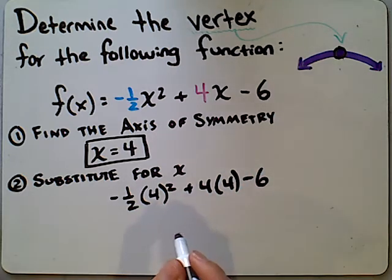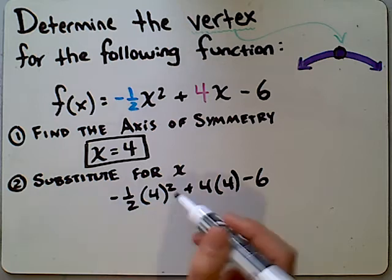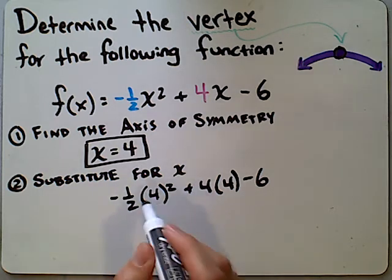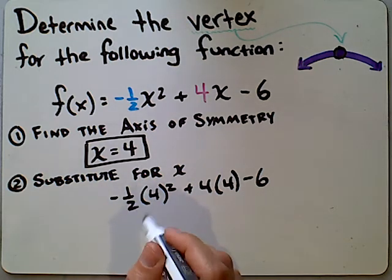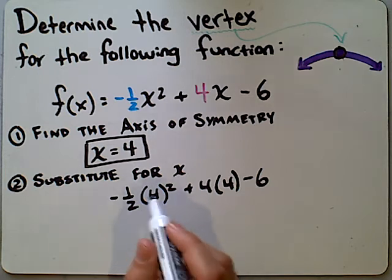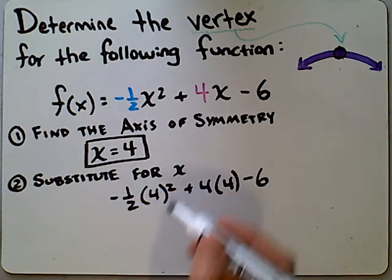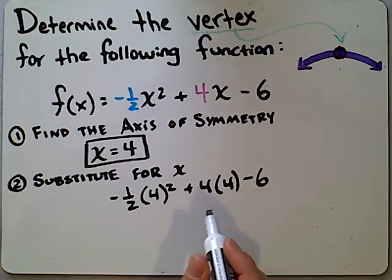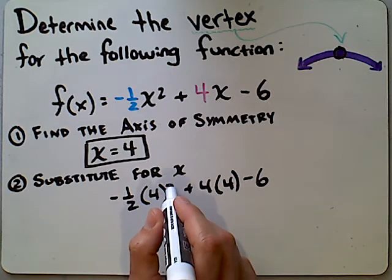One thing I want to make sure to do here, I know we know our orders of operations. We know exponents come before multiplication. But sometimes when you get two numbers that are being multiplied and they're sitting right next to one another, students mistakenly multiply first before using the exponent rules. We have to make sure in this case we square the 4 first.